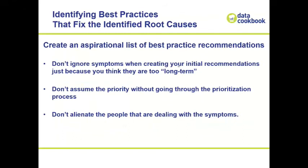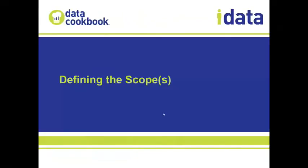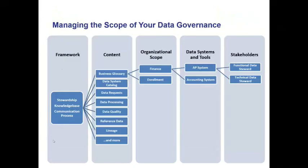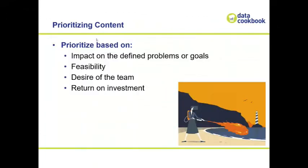We're looking at making an aspirational list of recommendations and things that need to be done. Don't worry if they're too long-term, as long as they have a real return. Don't worry too much about prioritization at this stage — you don't want to leave anything out. The next step is to prioritize and define scope: framework effort, content effort, organizational scope, tools and systems, individuals and roles. Prioritize based on impact on your defined goals, feasibility, team desire, and return on investment.